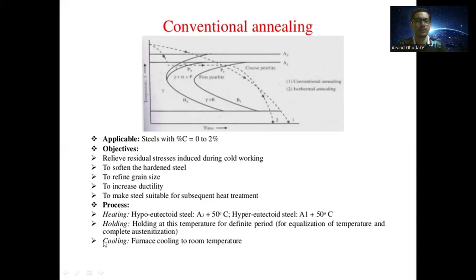In the process of conventional annealing, the first step is heating. Hypo-eutectoid steel is heated to A3 temperature plus 50°C, and hyper-eutectoid steel to A1 temperature plus 50°C. A3 is 910°C and A1 is 727°C. Hypo-eutectoid steel contains less than 0.18% carbon, and hyper-eutectoid steel contains between 0.18 and 2% carbon.